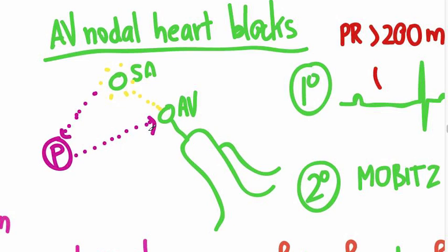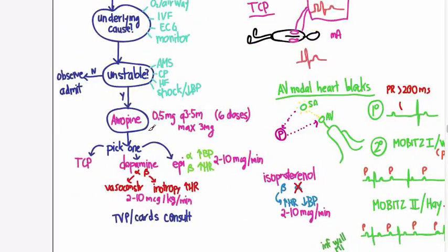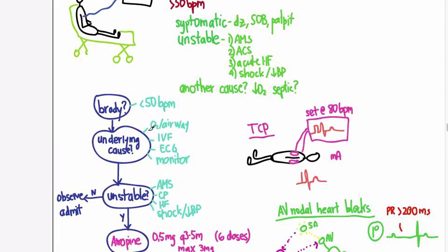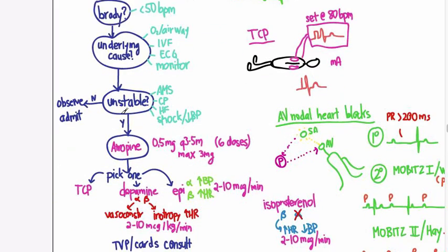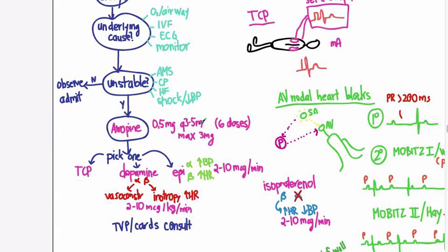That's our bradycardias. To review: confirm the patient really has a bradycardia — less than 50 beats per minute — then look for and treat any underlying cause. If the patient is unstable — defined specifically as altered mental status, chest pain, acute heart failure, or shock — treat them. If they're not unstable, observe and admit. This is bradycardia with a pulse; pulseless arrests were covered in a previous video. For unstable patients, give atropine 0.5 milligrams every 3 to 5 minutes, max 3 milligrams. If that doesn't work, choose transcutaneous pacing, dopamine, or epinephrine. If that fails, call cardiology and consider a transvenous pacer. Next up: tachycardias.